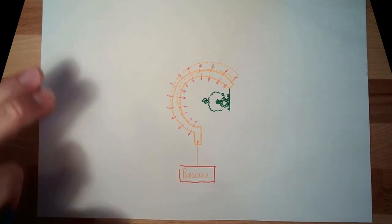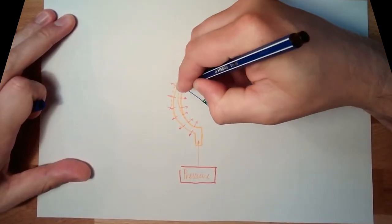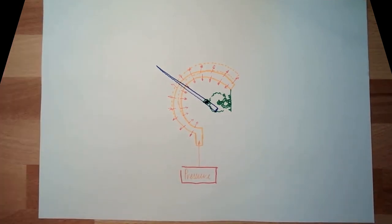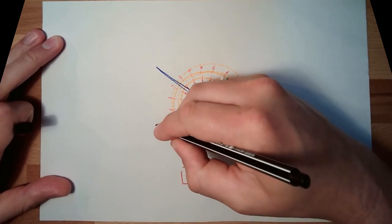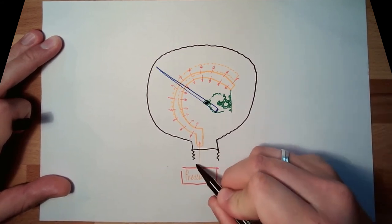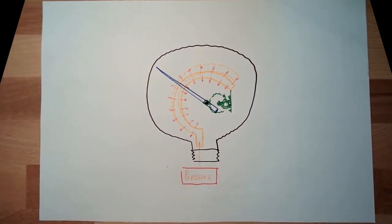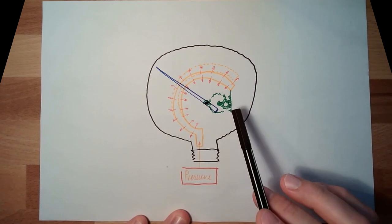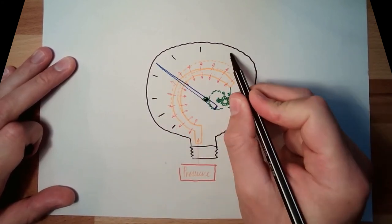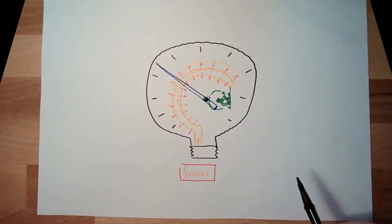And what follows next is a pointer. We do have a pointer connected to this middle gear here. That's our display. And in total, totally, we do have now a manometer. A mechanical manometer, pressure measurement device. We have a sensor, we have an amplifier, we have a pointing device, a display. And here we have a scale, how much quantity of pressure we do have. And the more we are moving here, the more pressure we will get displayed.